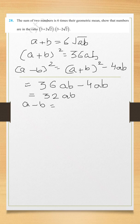Now we can take A minus B. Under root 32 is 4 root 2 into under root of AB.